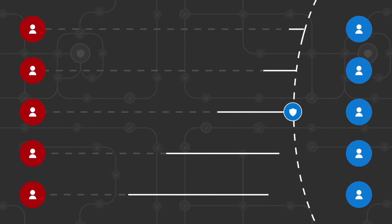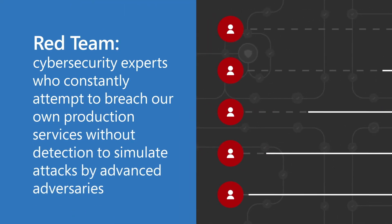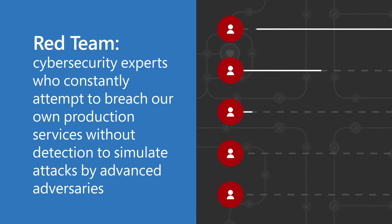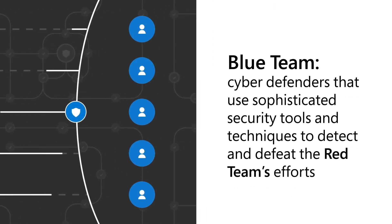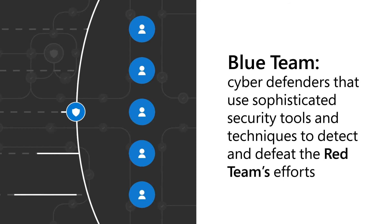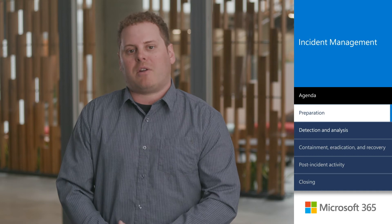To ensure we stay ahead of even the most determined adversaries, Microsoft regularly conducts red and blue team cybersecurity exercises. The red team consists of Microsoft cybersecurity experts who constantly attempt to breach our own production services without being detected, in order to simulate attacks by advanced adversaries. Our blue team is a group of highly skilled cyber defenders that use sophisticated security tools and techniques to detect and defeat the red team's efforts. Following each exercise, full transparency and collaboration across these teams helps uncover potential weaknesses. By breaking down organizational silos and sharing knowledge, Microsoft is able to better protect, detect, and respond to security events. Red team versus blue team exercises are performed both at enterprise level and service component level throughout the year.